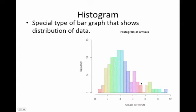If we look at this histogram of arrivals — arrivals per minute — in the first 15 seconds there were zero arrivals. Between 15 and 30 seconds, there was one arrival. Between 30 and 45 seconds, there were two arrivals. You can see how they span out over time. It's basically counting the frequency of things.